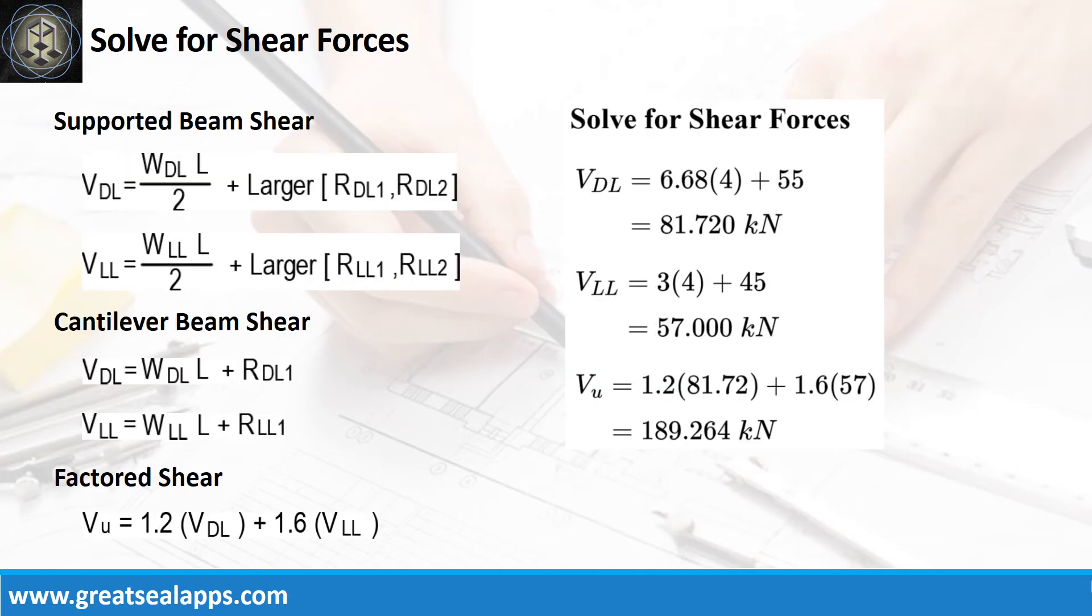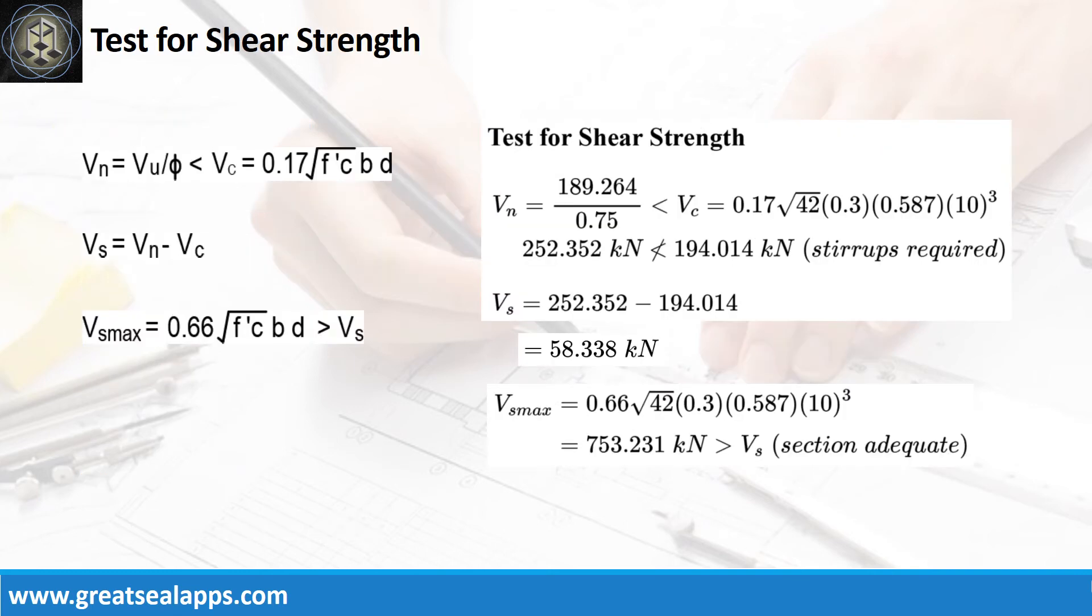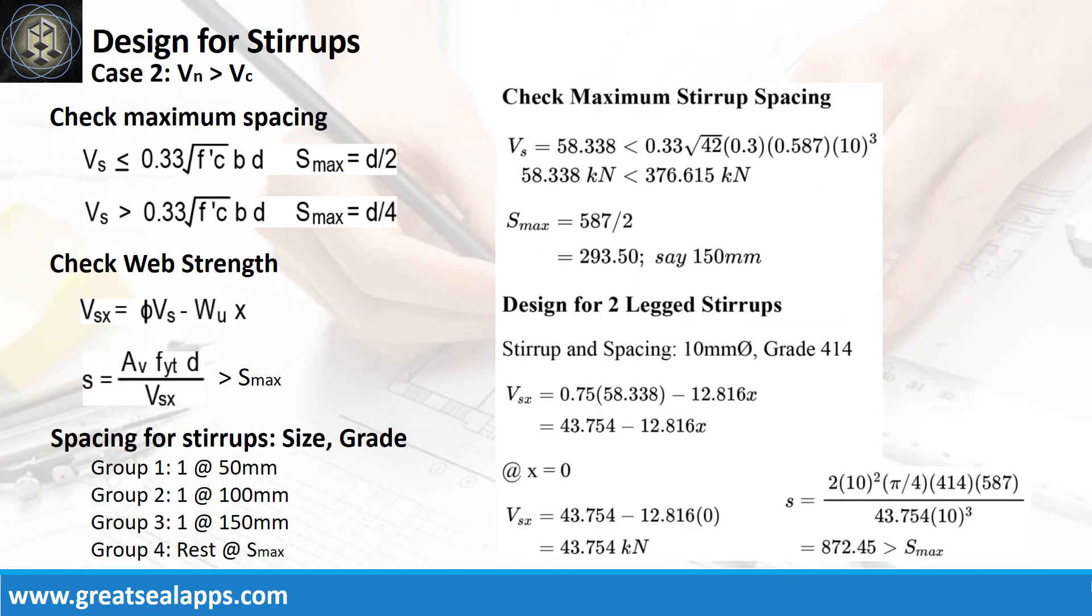The shear force from dead load is 81.72 kN and live load is 57 kN for a factored shear force of 189.264 kN. The nominal shear force is 252.352 kN, greater than 194.014 kN concrete capacity. Additional shear capacity from stirrup is 58.338 kN, less than 753.231 kN maximum stirrup capacity.